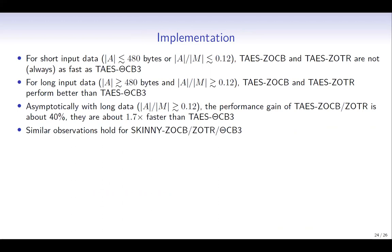The observation we make here is that for short input data, where the AD length is at most about 500 bytes or the AD length is less than 12% of the plaintext length, ZO-CB and Z-OTL do not perform better than ThetaCB3. On the other hand, if the AD length is longer than 12% of the plaintext length with sufficiently long input, the performance gain is about 40%, meaning they are about 1.7 times faster than ThetaCB3. Similar observations hold if we use Skinny as the underlying TBC.